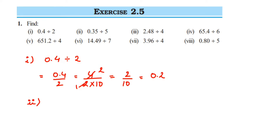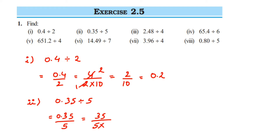Next: 0.35 divided by 5. We have two digits after the decimal, so removing it gives 35 divided by 5 multiplied by 100. Cancel: 5 sevens are 35, so we get 7 upon 100. Two zeros in the denominator means we put the decimal two digits from the right: 0.07 is the answer.